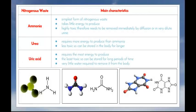There are three main types of nitrogenous waste. Ammonia is the simplest form and takes very little energy to produce; however, it is highly toxic, so it needs to be removed immediately by diffusion or excreted in a very dilute urine. Urea, which is the main nitrogenous waste that we produce, requires more energy to produce than ammonia; however, it is less toxic and therefore can be stored in the body for a longer period of time.